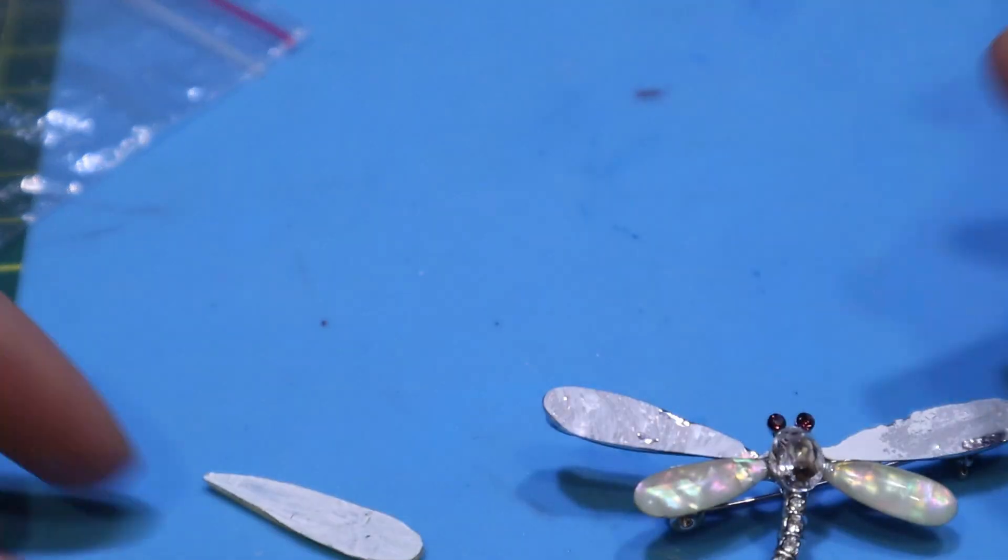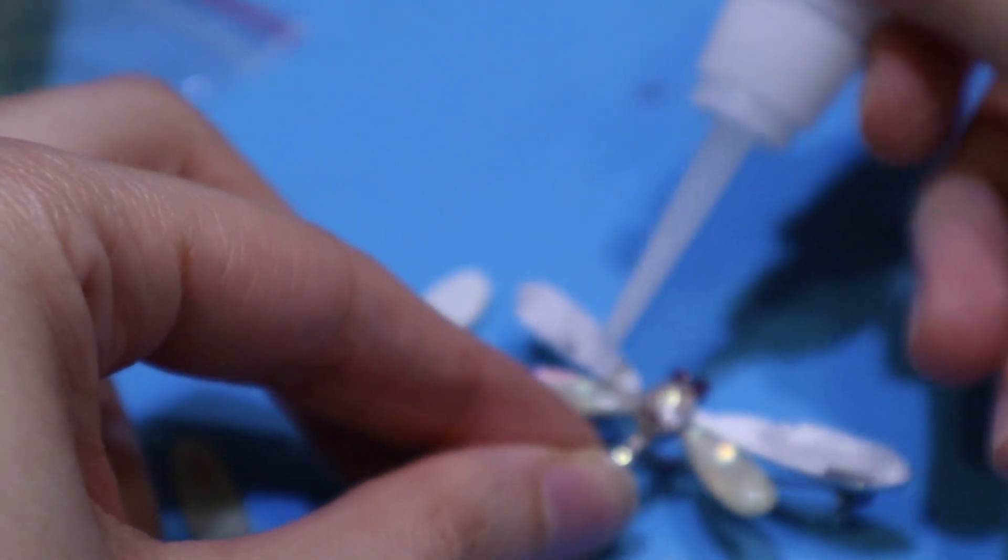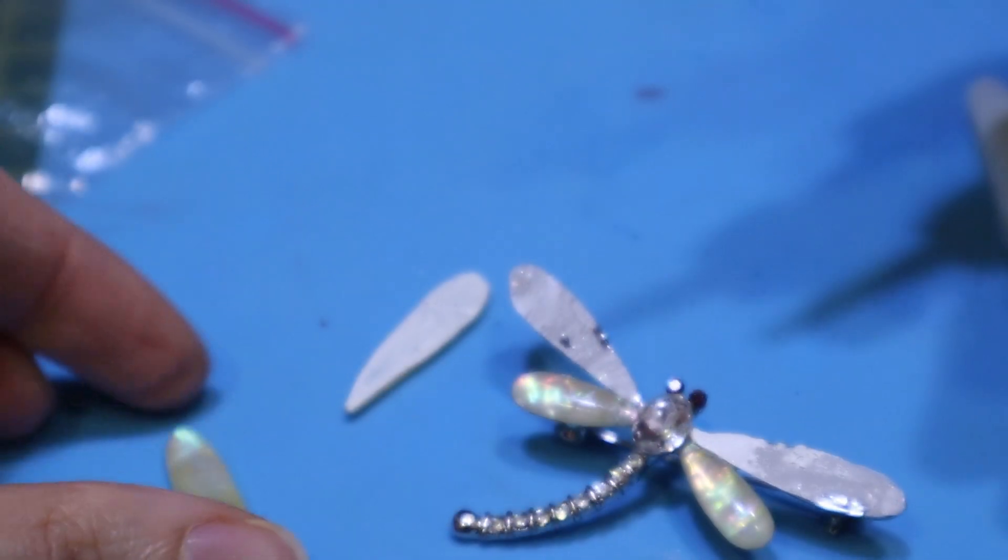When everything is dry, I just use a drop of super glue to add the beads to the brooch.